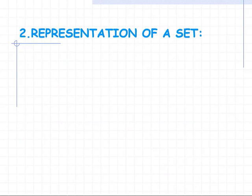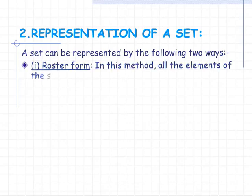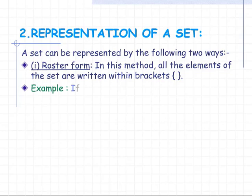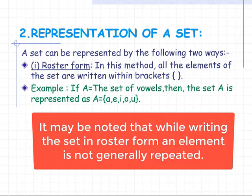A set can be represented by the following two ways. The first method is the Roster form. In this method, all the elements of the set are written within curly brackets. For example, if A is the set of vowels, then the set A is represented as {a, e, i, o, u} within curly brackets.